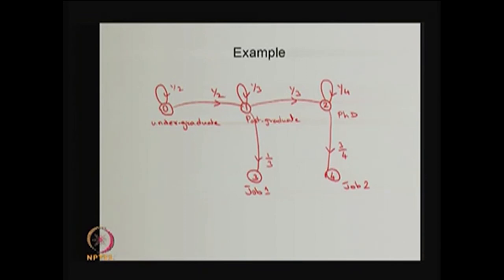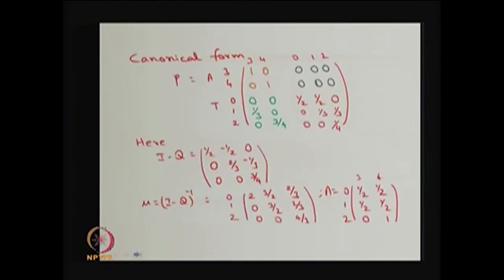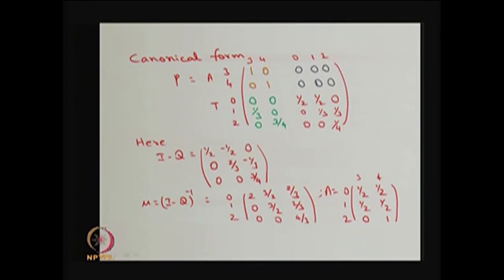This is the way you can visualize a reducible Markov chain of this type. These two questions are answered by finding the probability of absorption and the mean time up to absorption. First, let me write the P matrix in the canonical form. States 3 and 4 are absorbing states, so A-to-A is the identity matrix, A-to-T is the zero matrix, T-to-A is the R matrix, and T-to-T is the Q matrix.